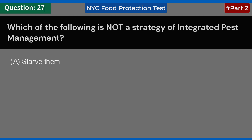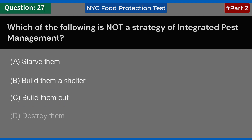Which of the following is not a strategy of integrated pest management? A. Starve them. B. Build them a shelter. C. Build them out. D. Destroy them. Answer: B. Build them a shelter.